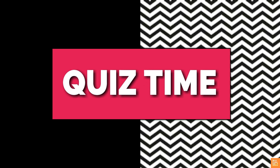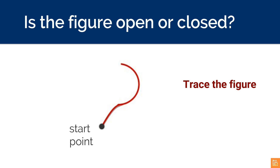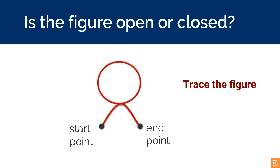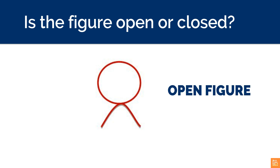Once this concept is clear, children will become more confident and enjoy math learning. Let us go back to the unanswered entry quiz. Once again, look at the figure and apply the method we have learned. Trace the figure starting from one end and move forward — no reverse move. Are you able to move back to the starting point? No? So it is an open figure. Hope it is clear now.